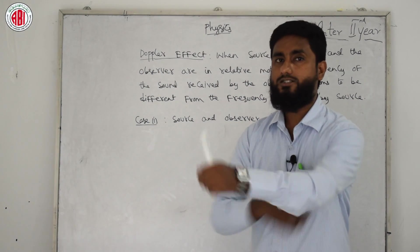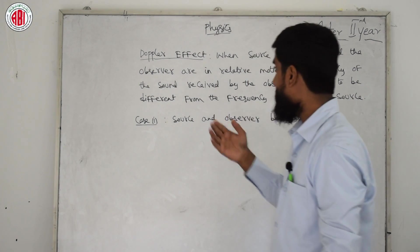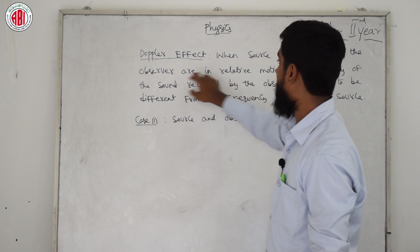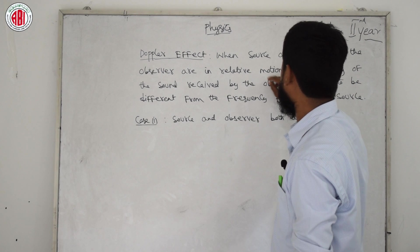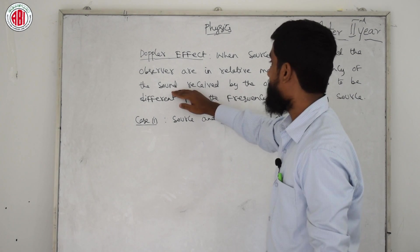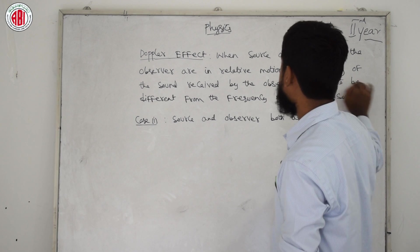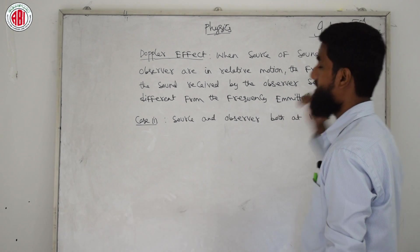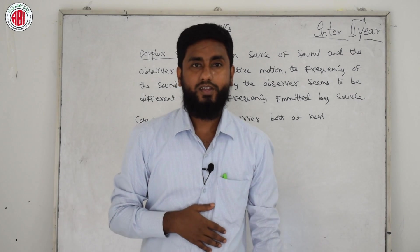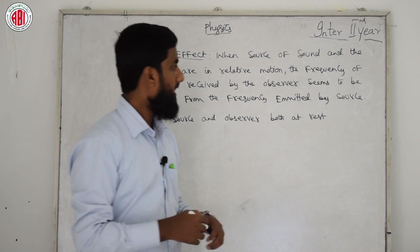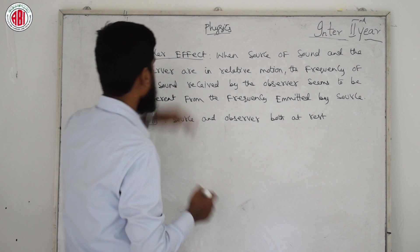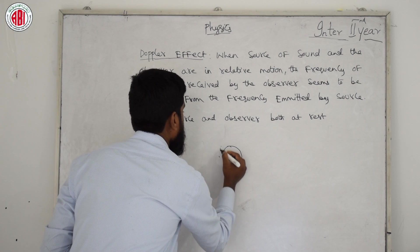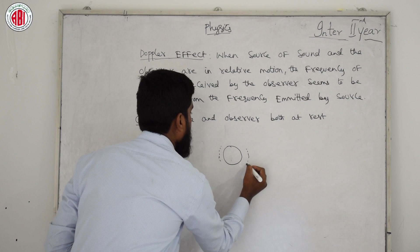Definition of Doppler effect: When a source of sound and the observer are in relative motion, the frequency of the sound received by the observer seems to be different from the frequency emitted by the source. Suppose this is the source of sound — I am writing it as 'source' on the board.